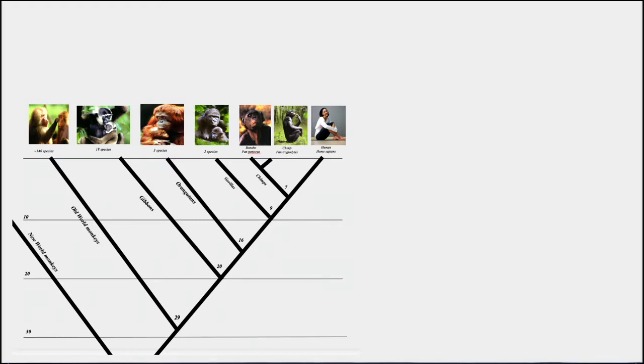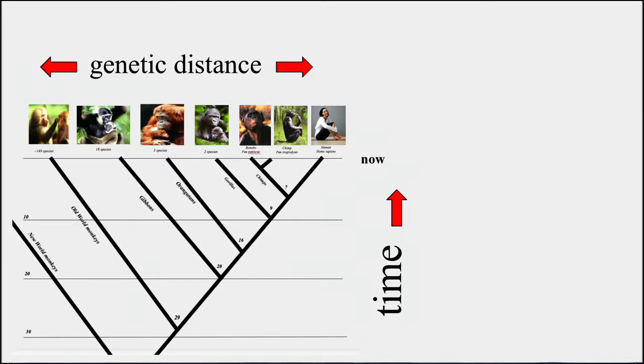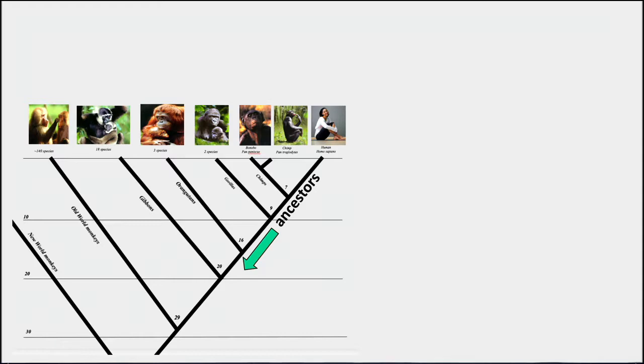So here's a phylogenetic tree. We have millions of years time on the vertical axis. Now is labeled humans on the right. And genetic distance between these different species is the horizontal axis. Our ancestors are along that diagonal line and our cousins are alive today on the horizontal line and that's why we can take pictures of them. Our closest cousins are here and our more distant cousins are over to the left.